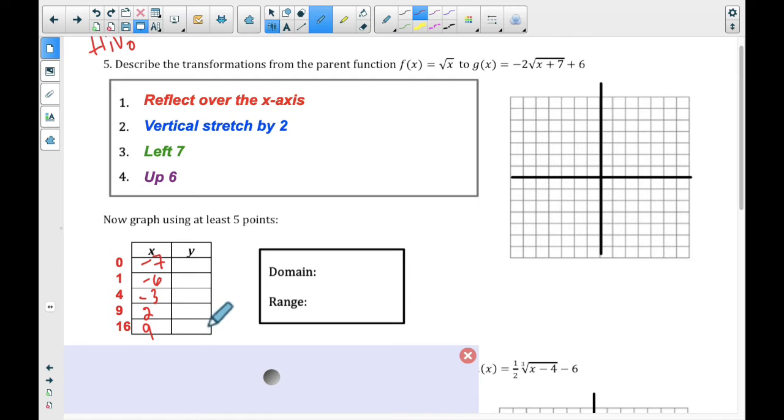Now, we can kind of mentally go through and plug these in. So negative 7, when you plug it in, you get 0. 0 times anything is 0, plus 6. That means that this must be a 6 here. Negative 6. Negative 6 plus 7 is 1. Square root of 1 is 1. 1 times negative 2 is negative 2. Plus 6 is 4. Negative 2 plus 6 is 4.